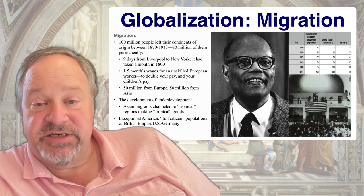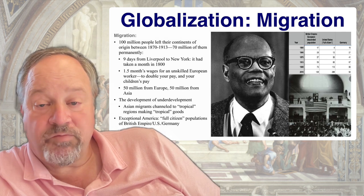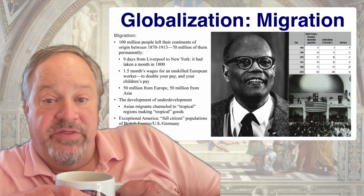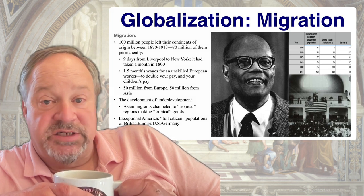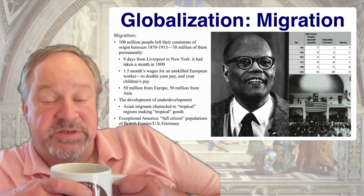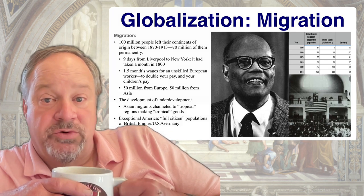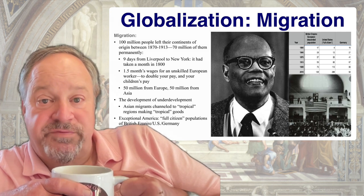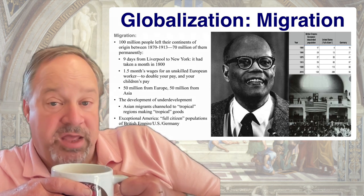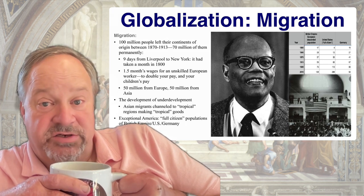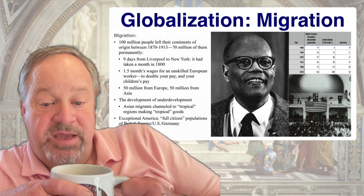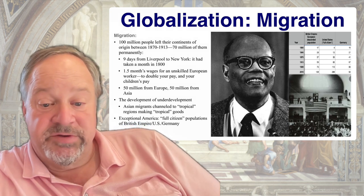What you had was an enormous increase in the supply of tropical goods from plantations, which depressed the prices that countries selling those tropical goods could get on the world market, and hobbled the growth of their middle class, preventing them from getting the process of industrialization and technological deployment going in their own countries. Migration also created exceptional America — the long 20th century was overwhelmingly an American century because it was global migration that gave America a full citizen population outstripping that of either the British or the German Empire.